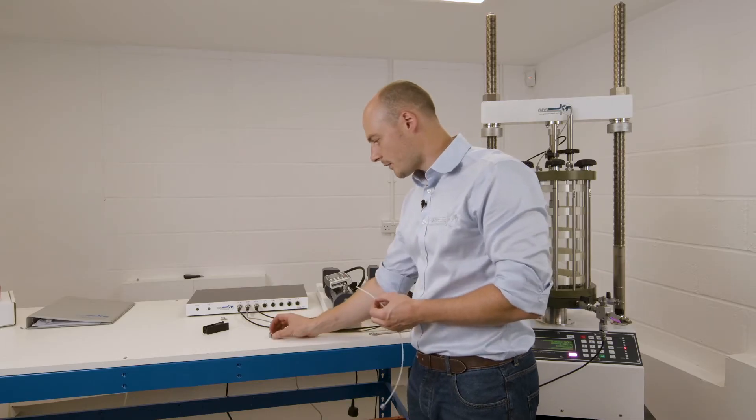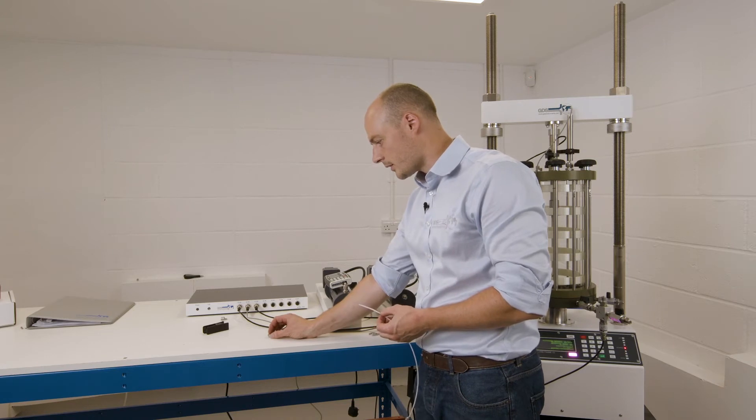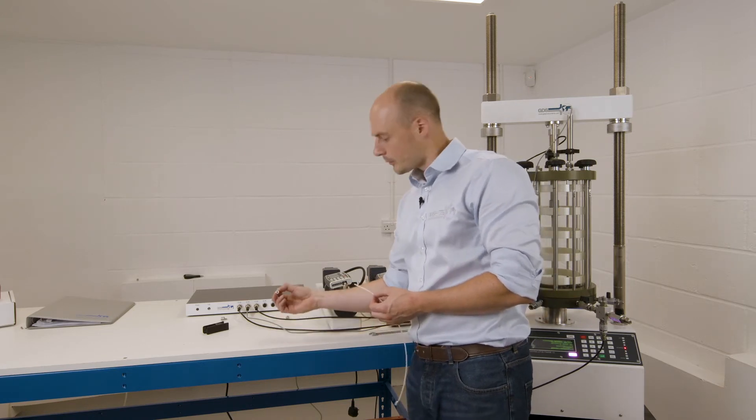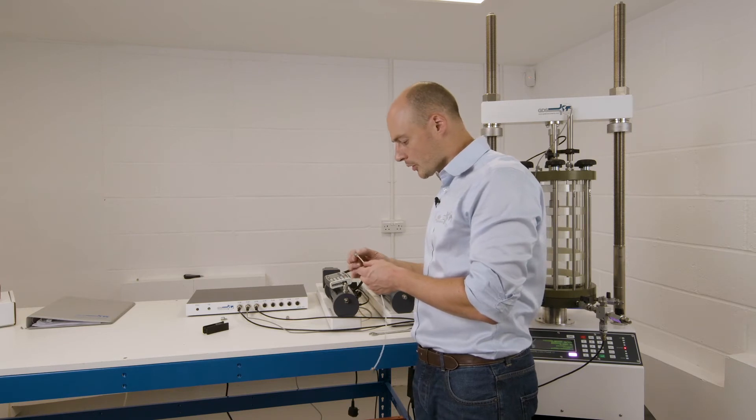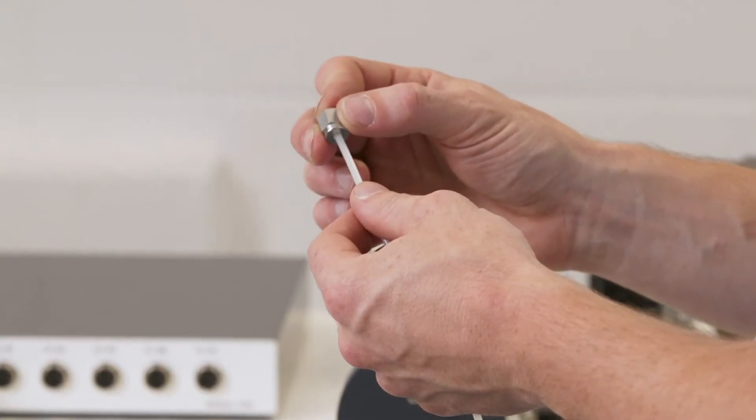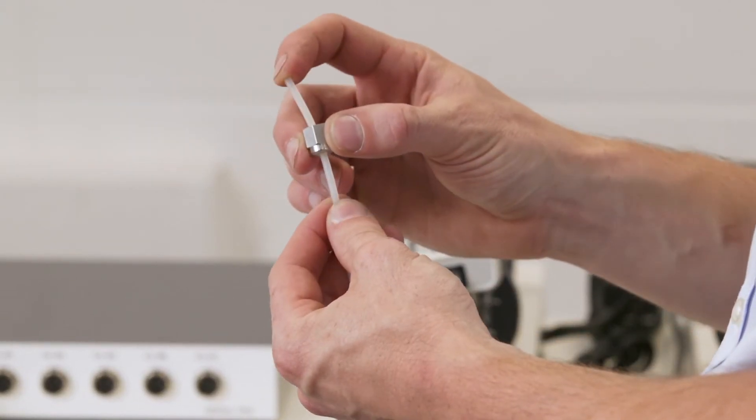Now we've cut our pipe, we can pick up our Swagelok connection. Put your finger over the end to stop all the internal fittings coming out. Push the pipe in, keeping the finger over the end until you feel the pipe push against your finger and then slide down.